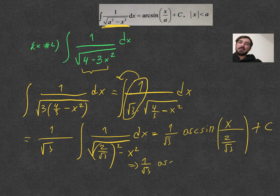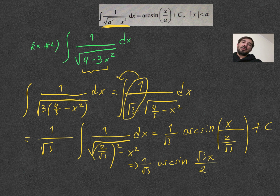We should always simplify: that gives 1 over square root of 3 times arcsin(square root of 3 · x over 2) plus C. Be careful — the square root of 3 here is not inside a square root; it's separate, so this is square root of 3 times x over 2, plus C.